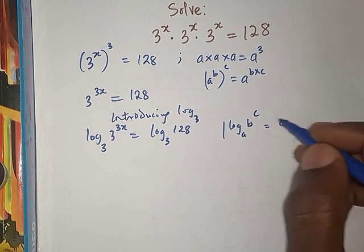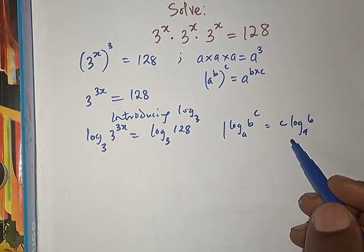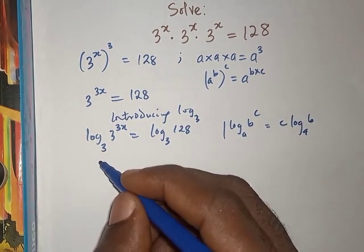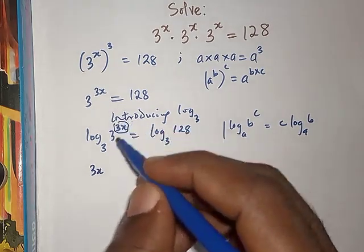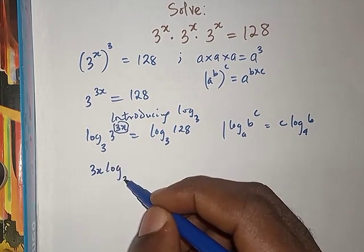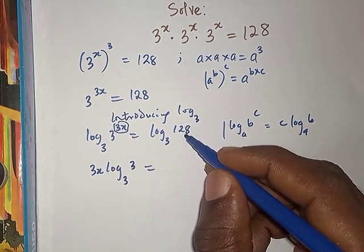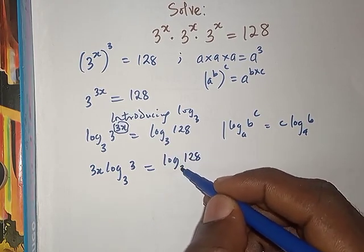We are going to use this idea here in the left-hand side. This is going to be 3x, that is this one here coming down: 3x log base 3 of 3 equals log base 3 of 128.